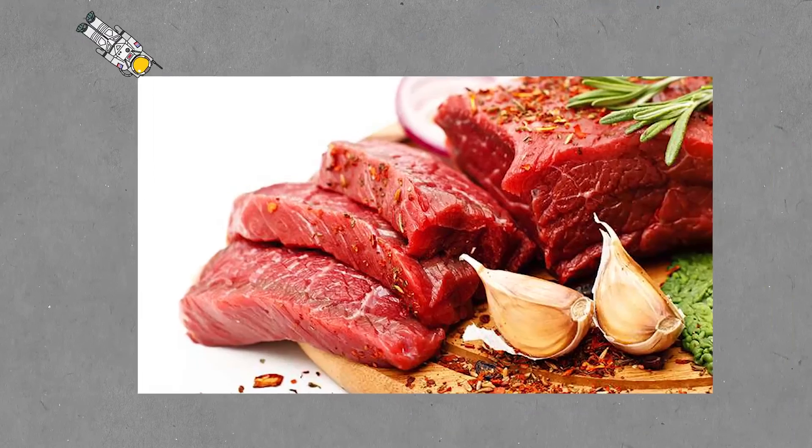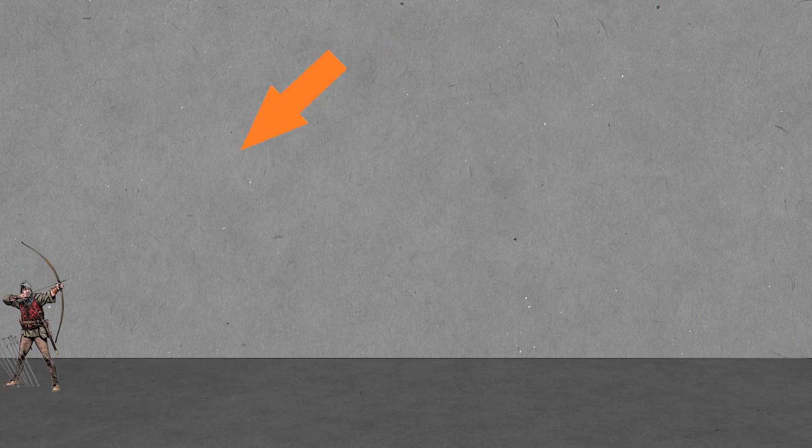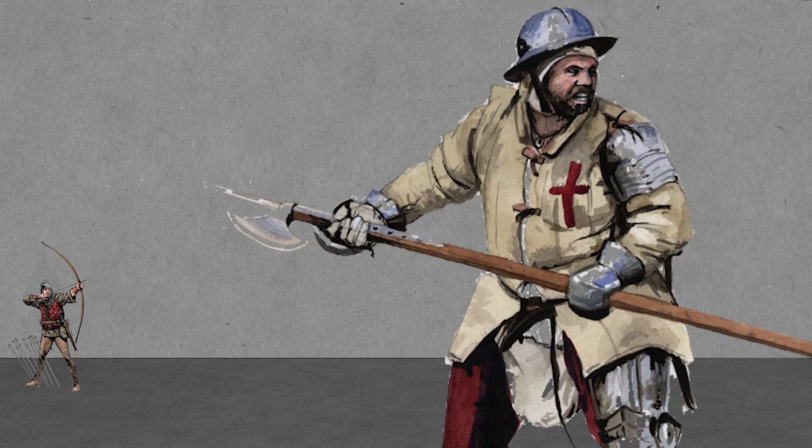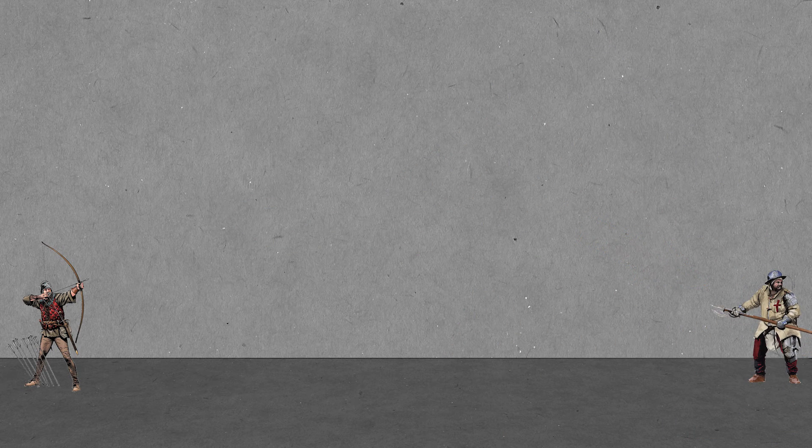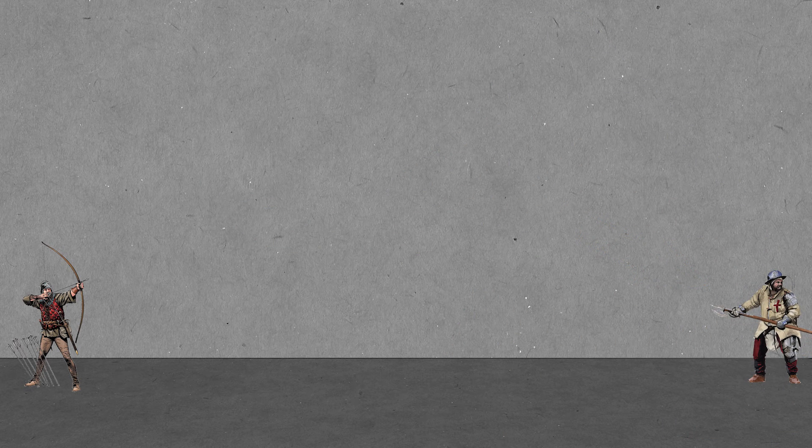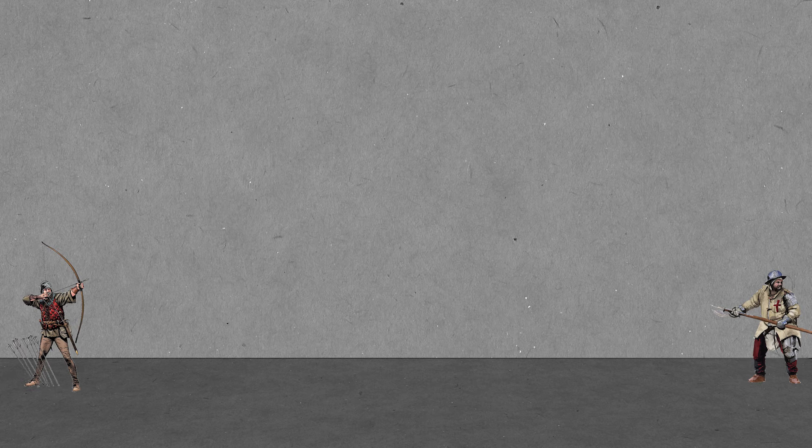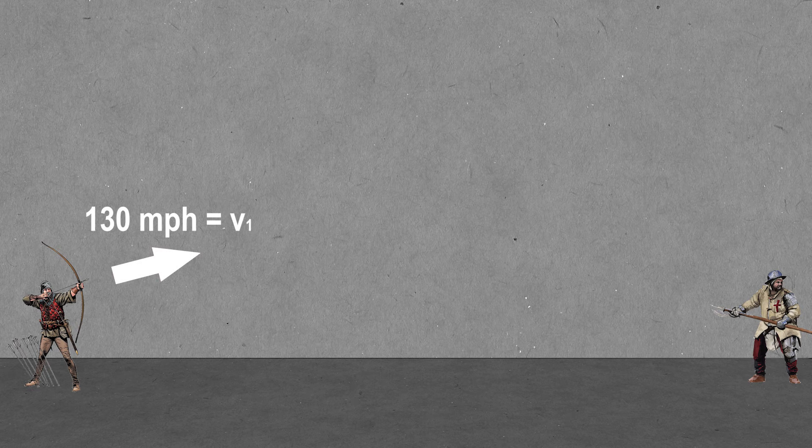But now let's get into the meat of this problem. So you are standing here, at the same level as your opponent, who is standing over here. Now, you fire an arrow at your opponent. As we said earlier, the arrow starts out going about 130 miles per hour, or V1.